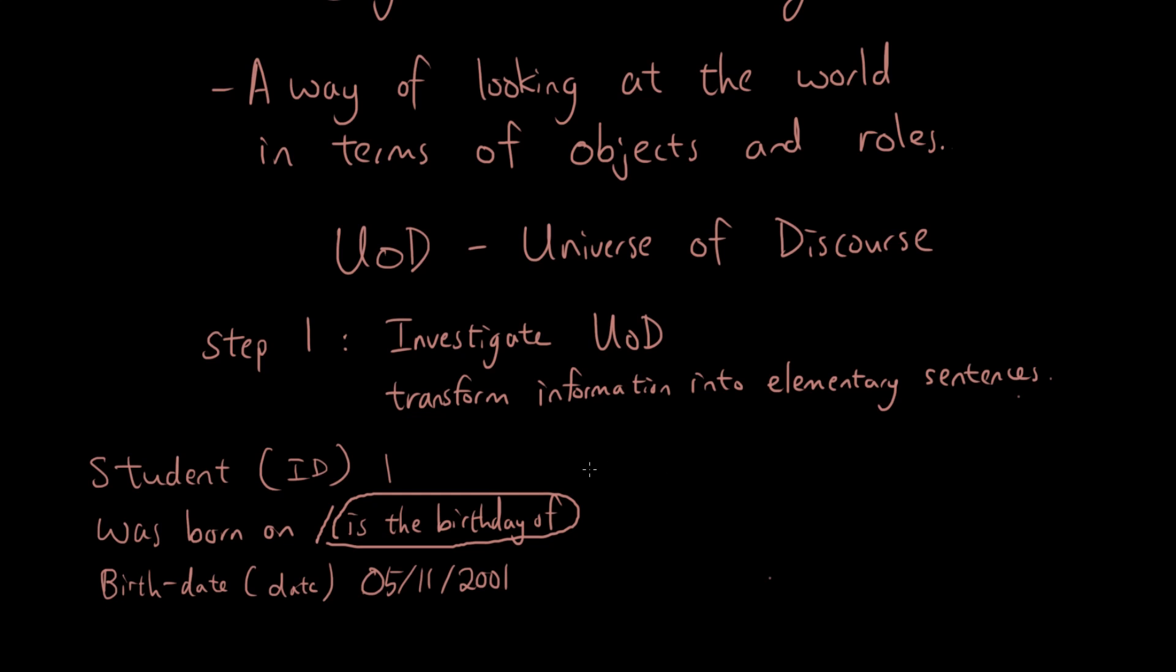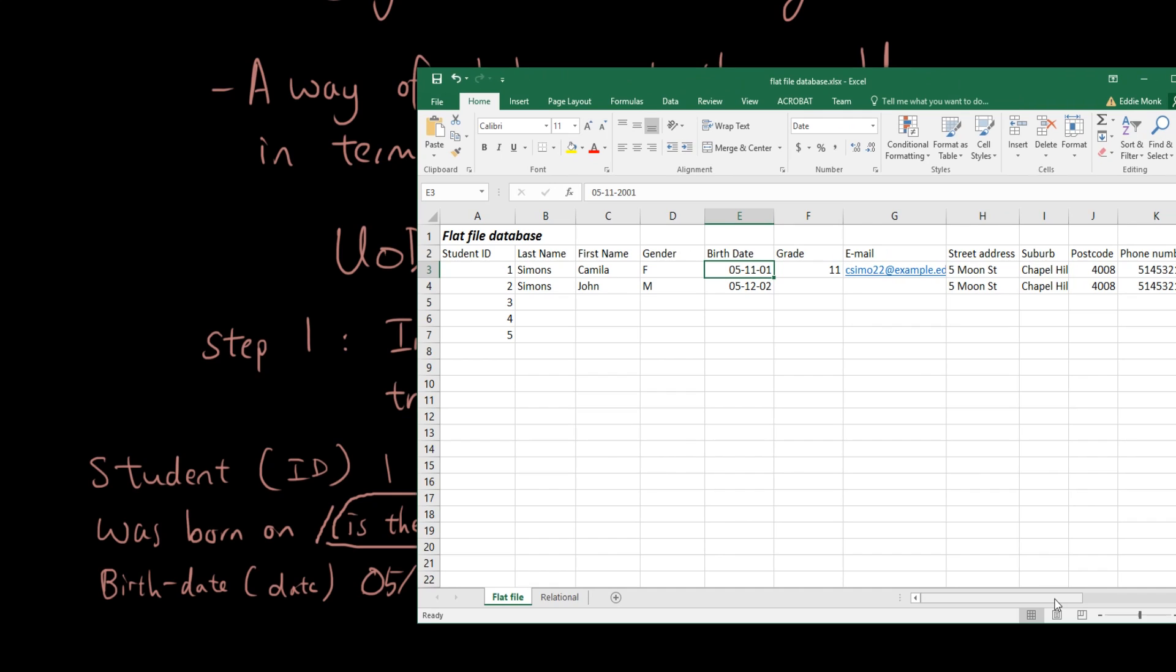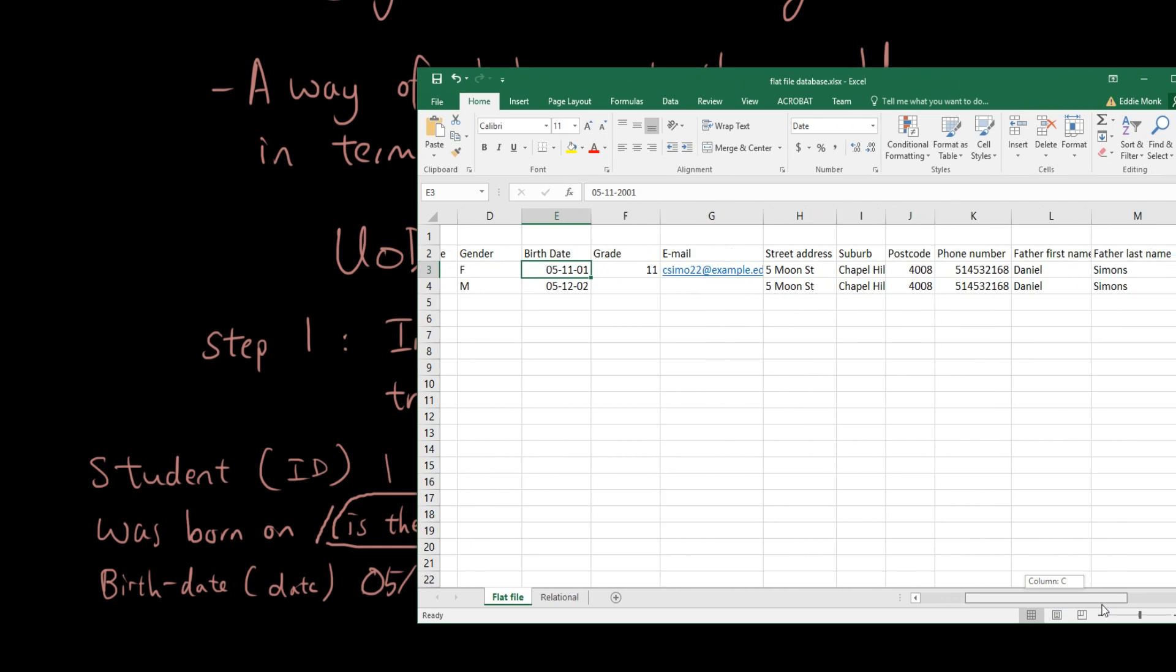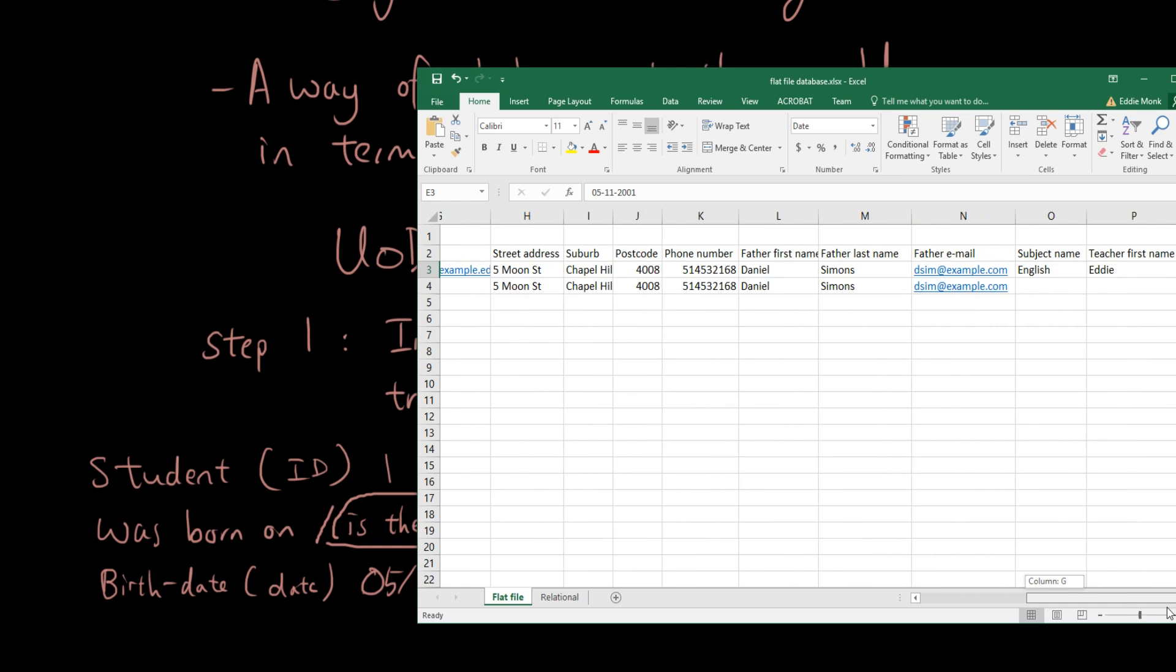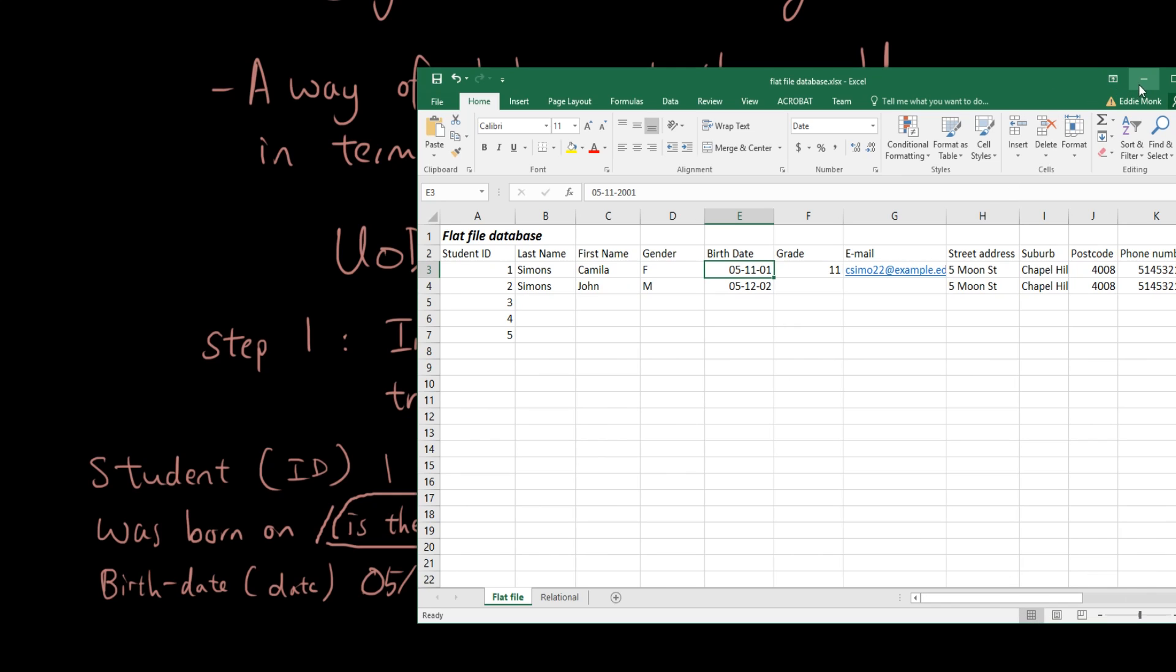Using this format I want you guys to think of another elementary sentence you can write from this first database. I've got student, ID, first name, last name, gender, birthday, grade, email address, phone number, father's name, and so much more stuff you can write. Come up with something.